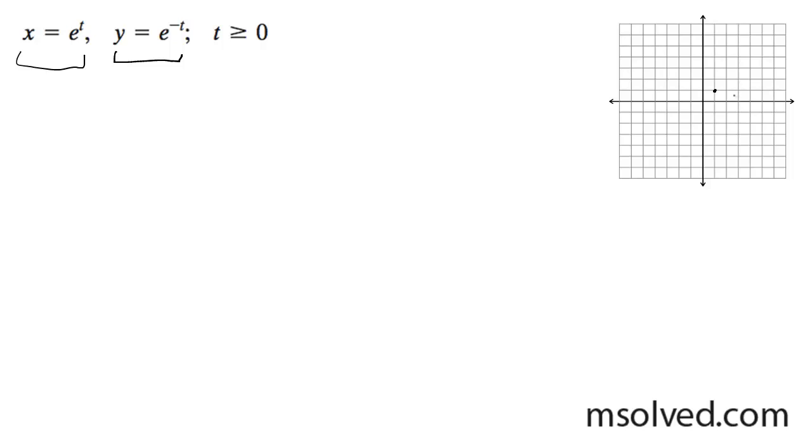So that would be like 2.718. So something over here. And then it just keeps decreasing and decreasing. So there you go.